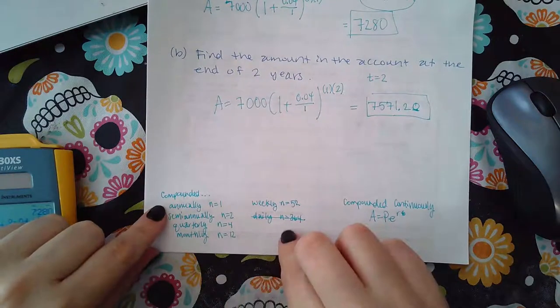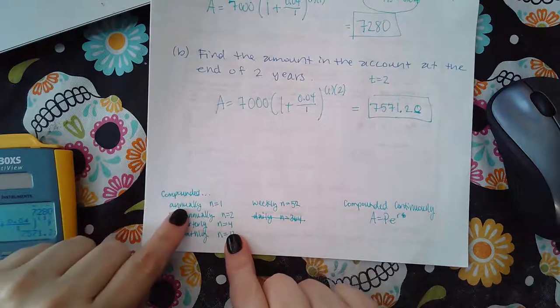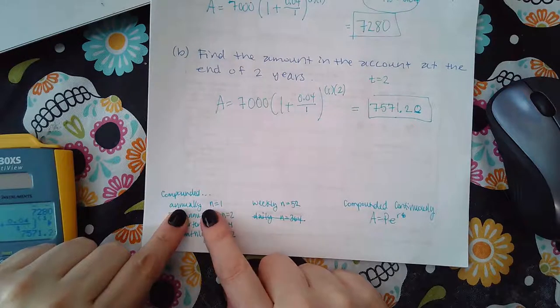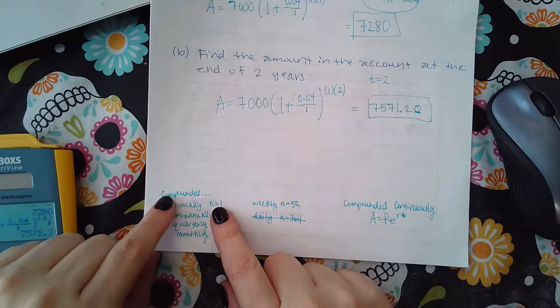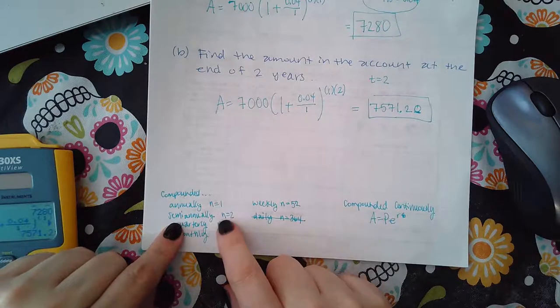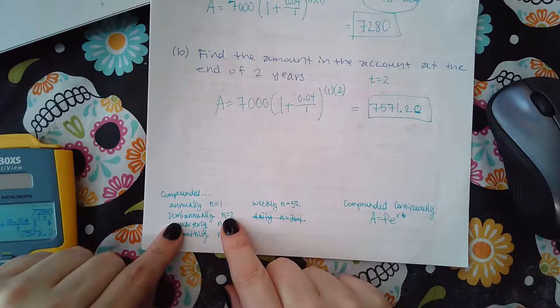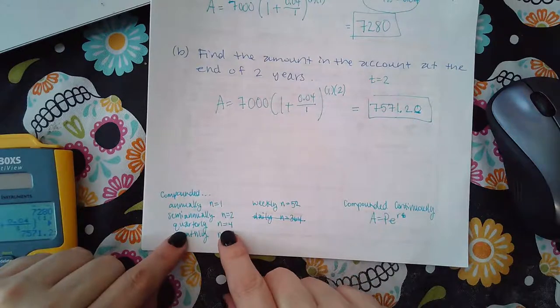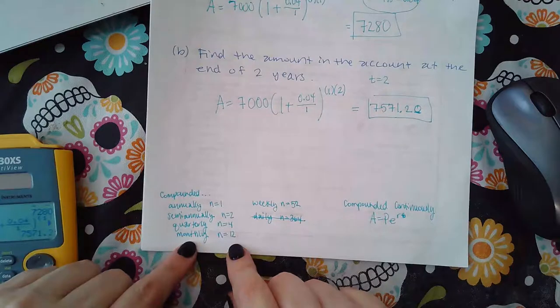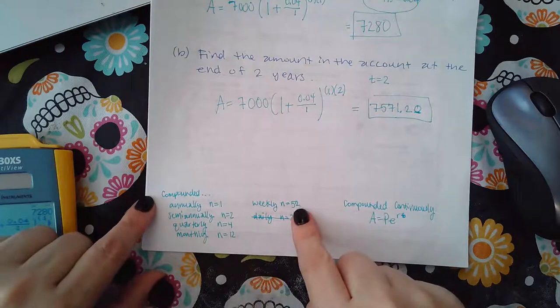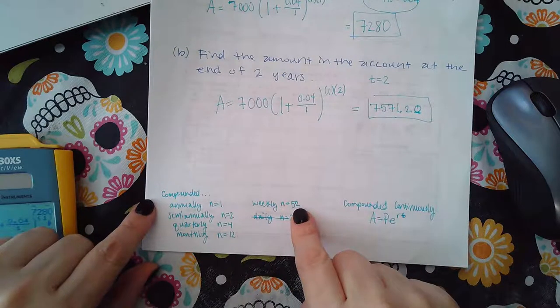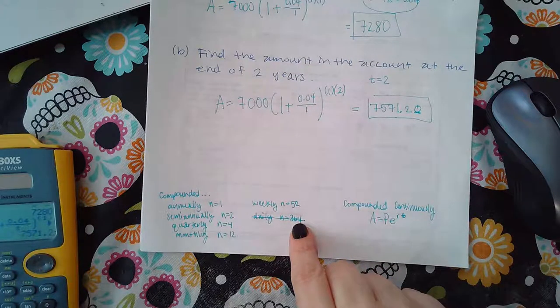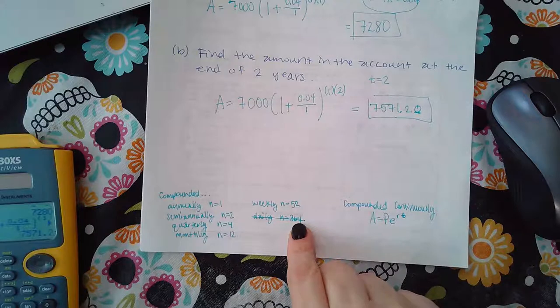So some traditional wordings: if it's compounded annually, that means it's only going to be compounded once per year, so the n value is equal to one. If it says compounded semi-annually, that means it's twice a year, so your n value will equal two. Compounded quarterly means four times a year. Compounded monthly means 12 times a year. Compounded weekly means 52 times a year. And then compounded daily is usually 364, but some authors use 365 and some use 360.